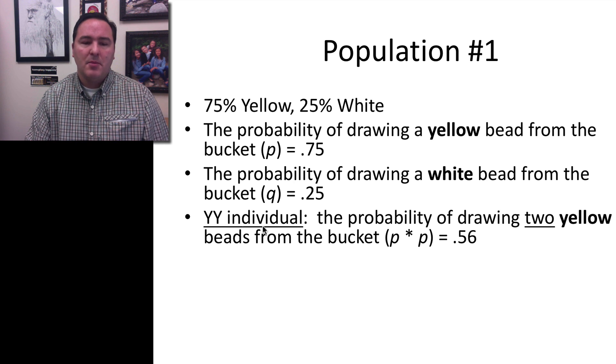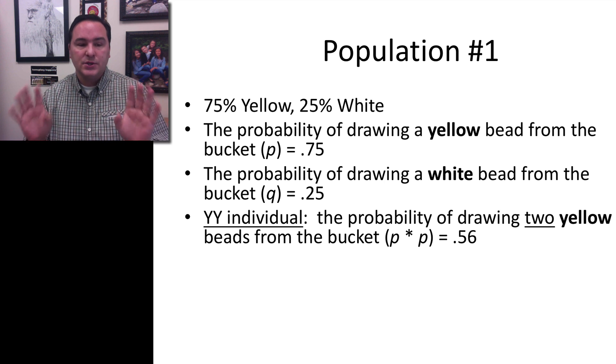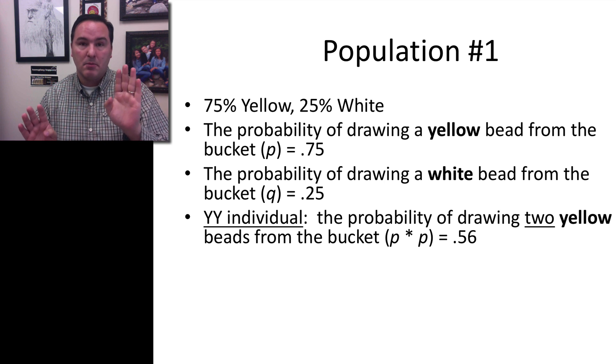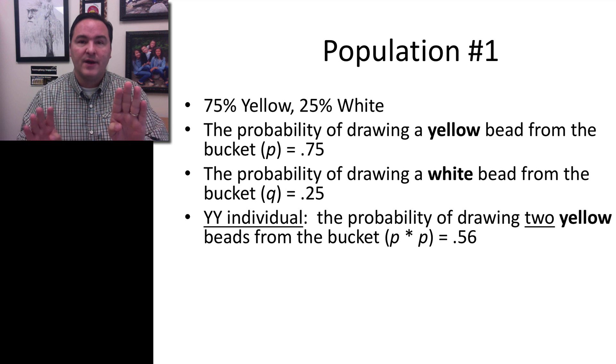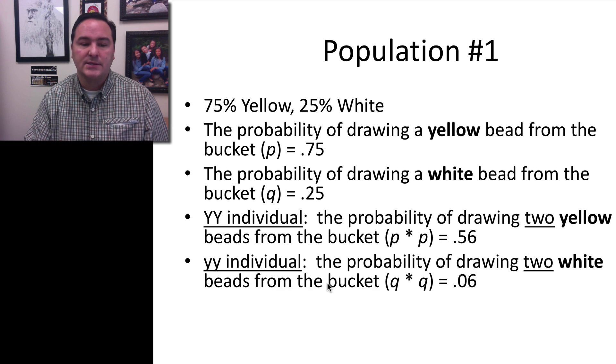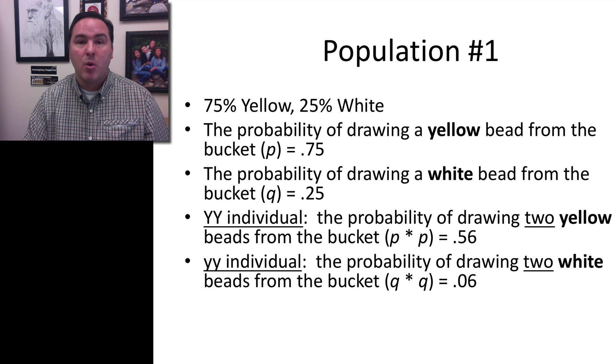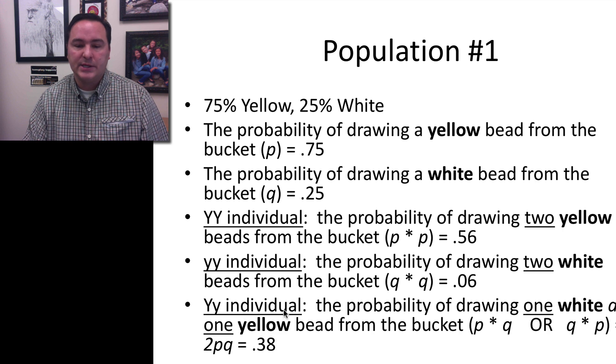So the probability of getting a big Y big Y individual is simply the probability of getting two yellow beads from the bucket. So the probability of 0.75 times 0.75, or P times P, which equals 0.56. The probability of two little y's is 0.25 times 0.25, or Q times Q, which is 0.06.